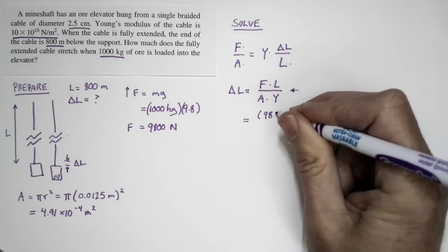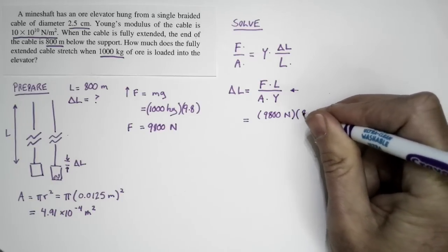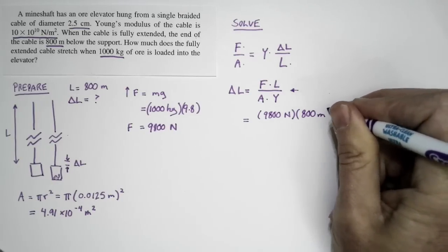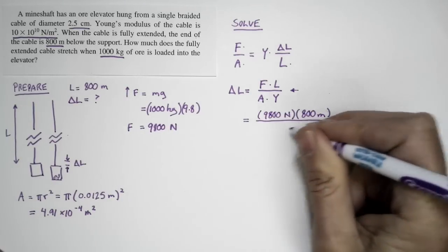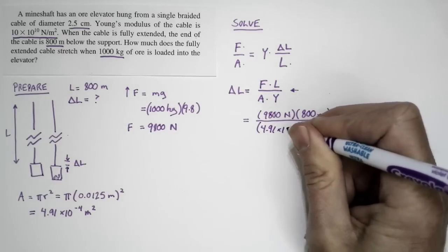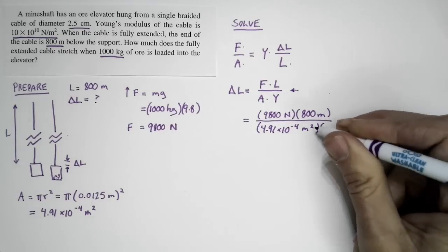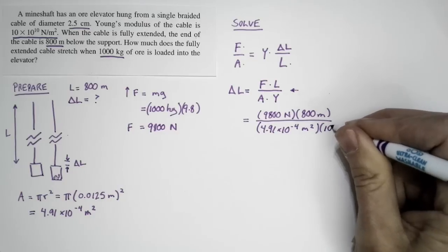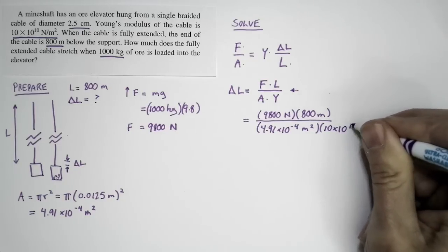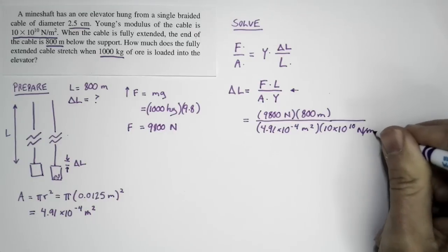We know the additional force is 9,800 newtons. We know the original length of the cable—800 meters. We know the cross-section area of the cable, which we calculated to be 4.91 times 10 to the minus 4 meters squared. And we also know Young's modulus—for this cable it's 10 times 10 to the 10th, and the units are newtons per meter squared.